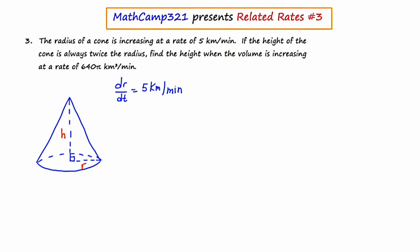The next statement says the height of the cone is always twice the radius. Find the height when the volume is increasing at a rate of 640π cubic kilometers per minute. So I've generated the list of givens and things that I'm trying to find, and I'm going to offset them in a green box.